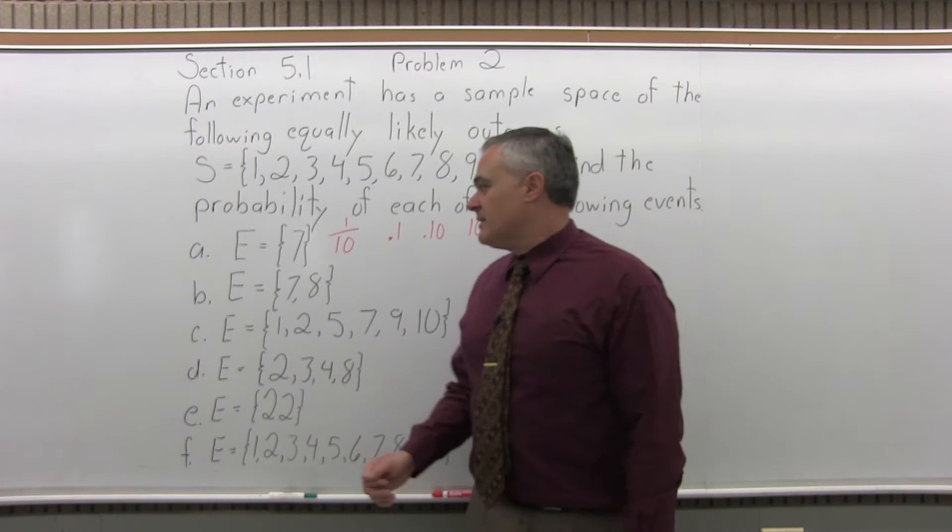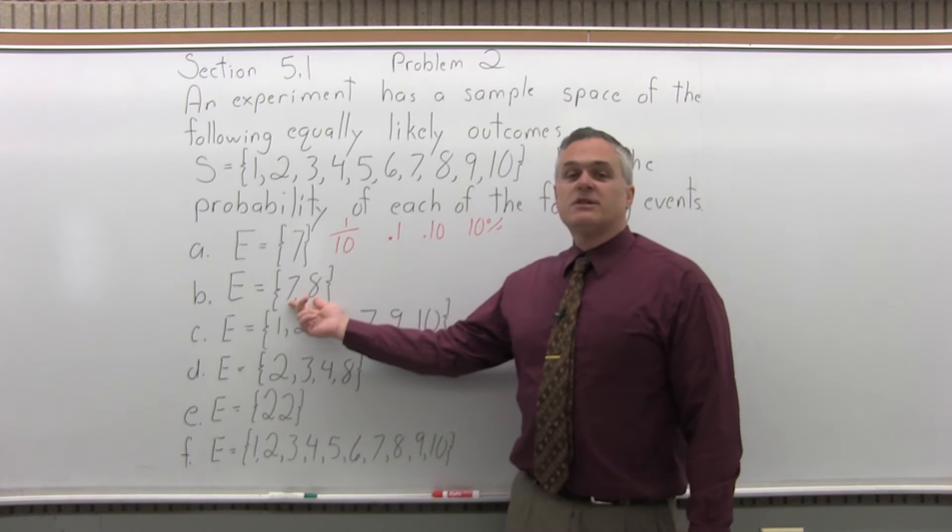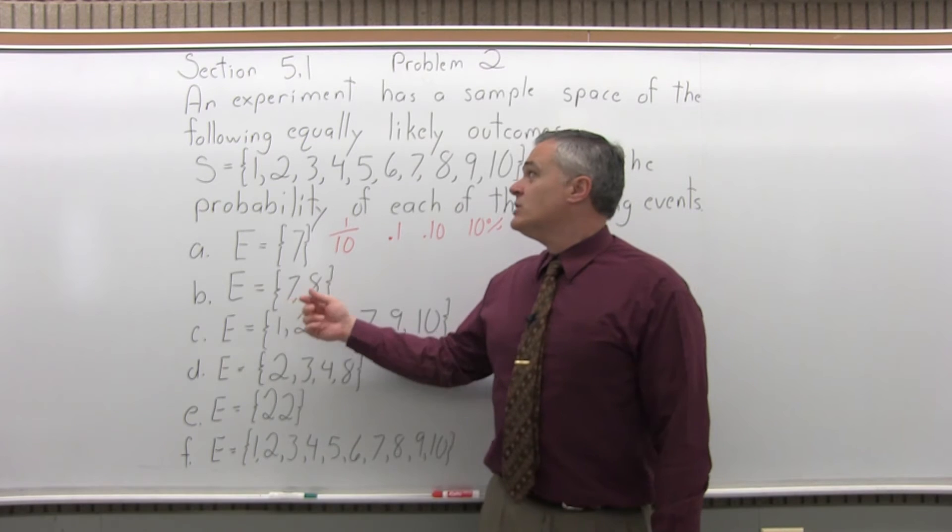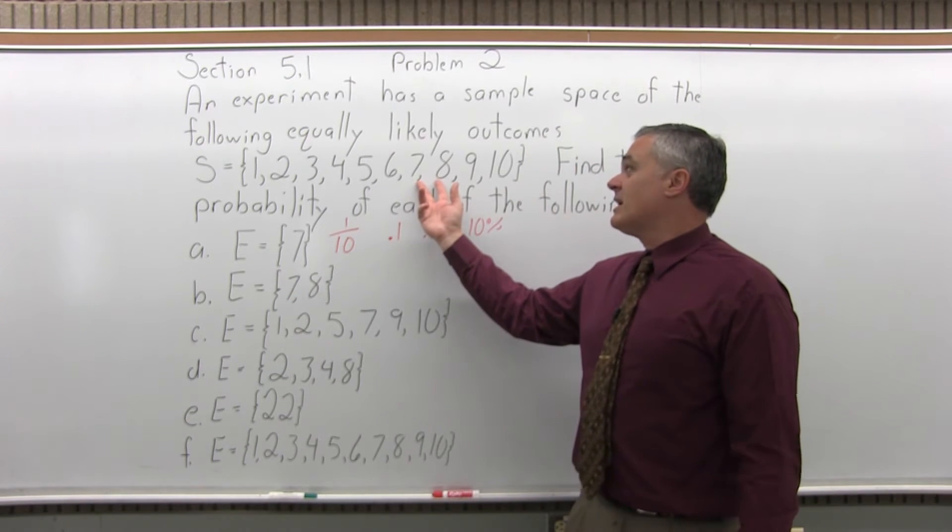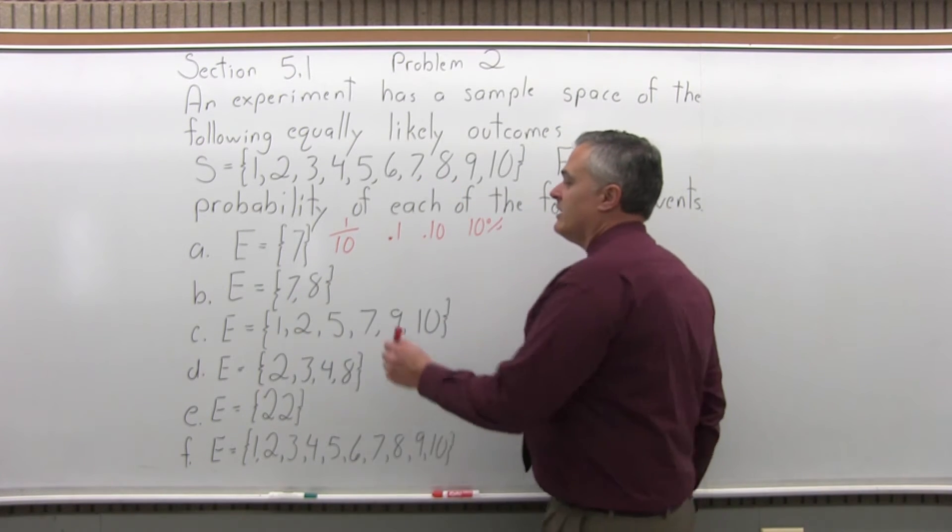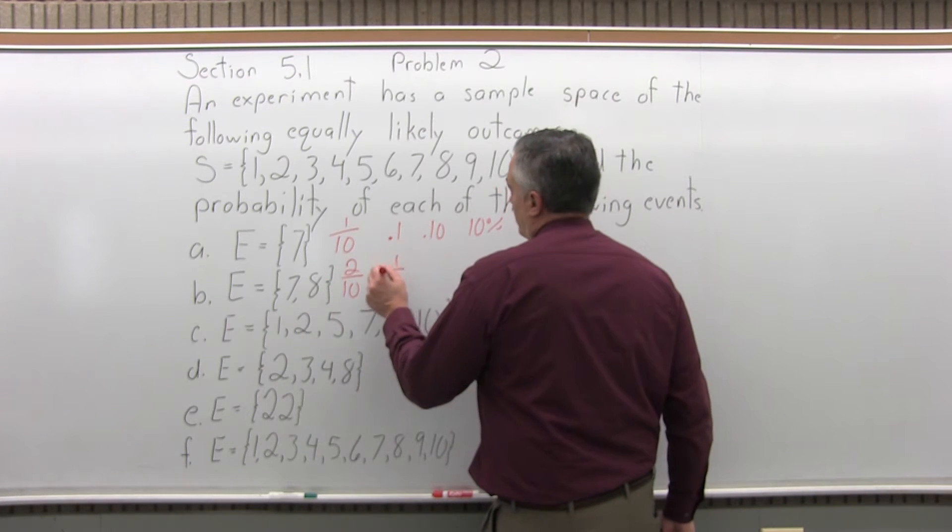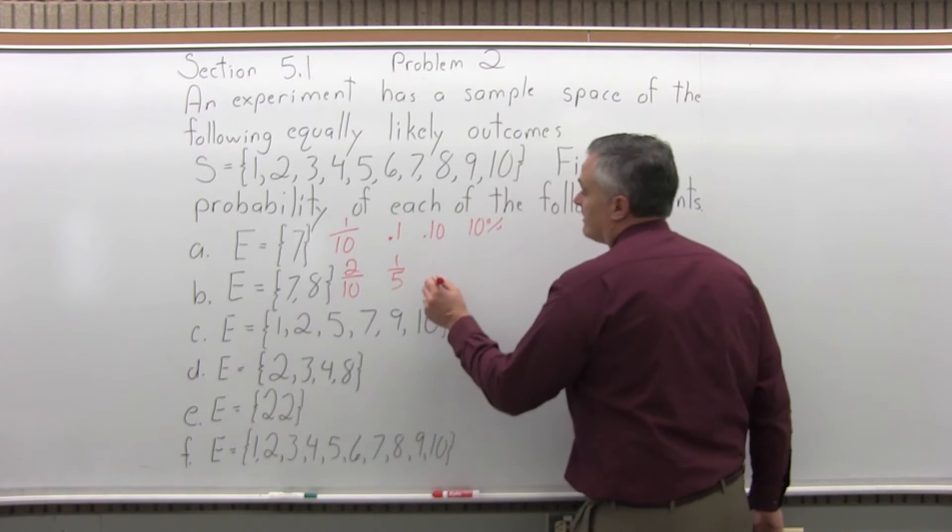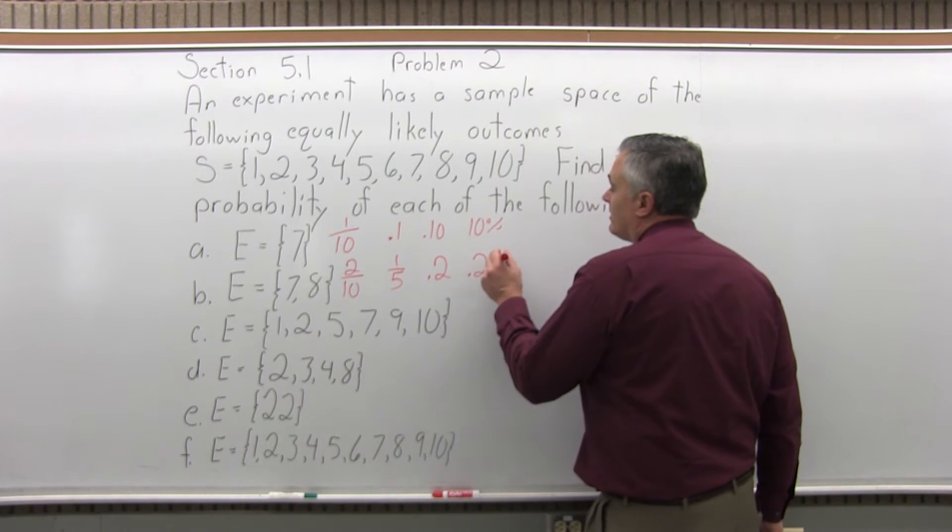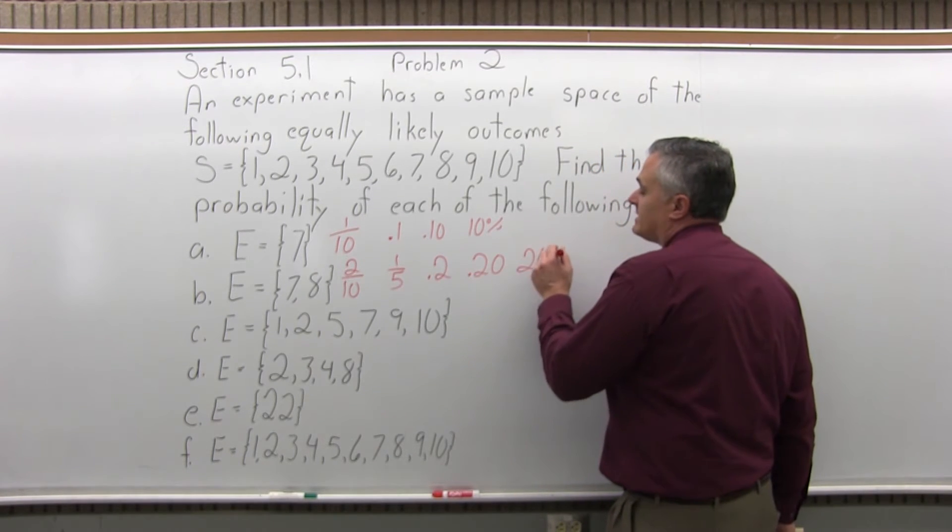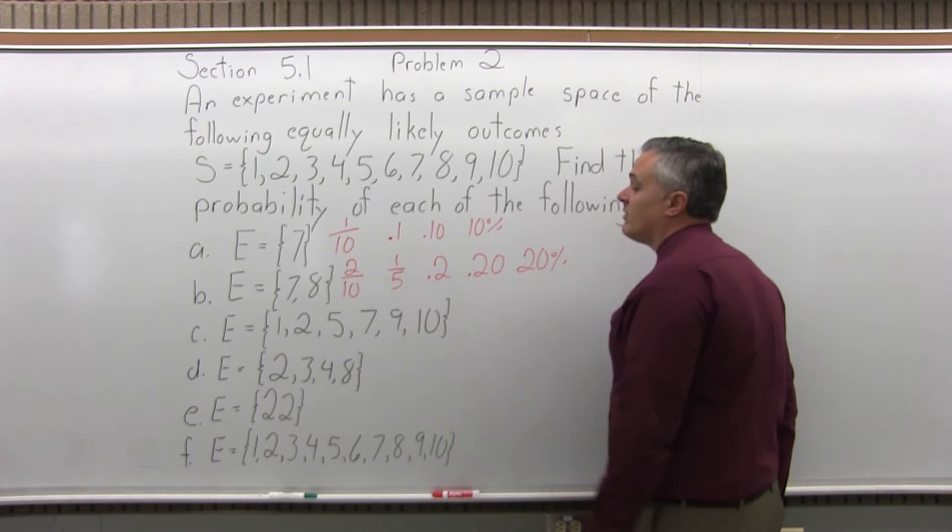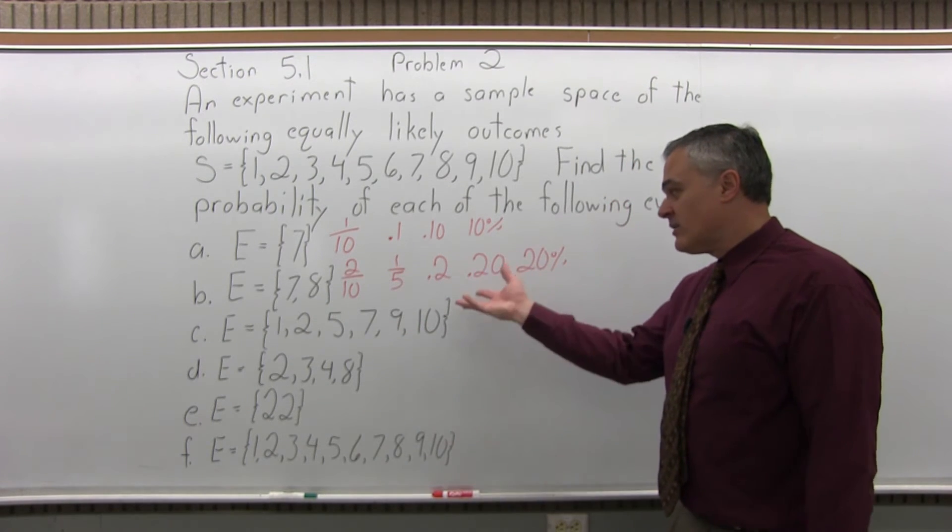Part B. What's the probability of getting a result of 7 or 8? So that's 2 out of the 10 possible outcomes that you can get. So it would be 2 over 10. If you like, you could reduce that to 1 over 5. You could write it as 0.2, 0.20, or 20%. Those all mean the same thing. You could leave it as 2 over 10, if you like, or any of the other forms.